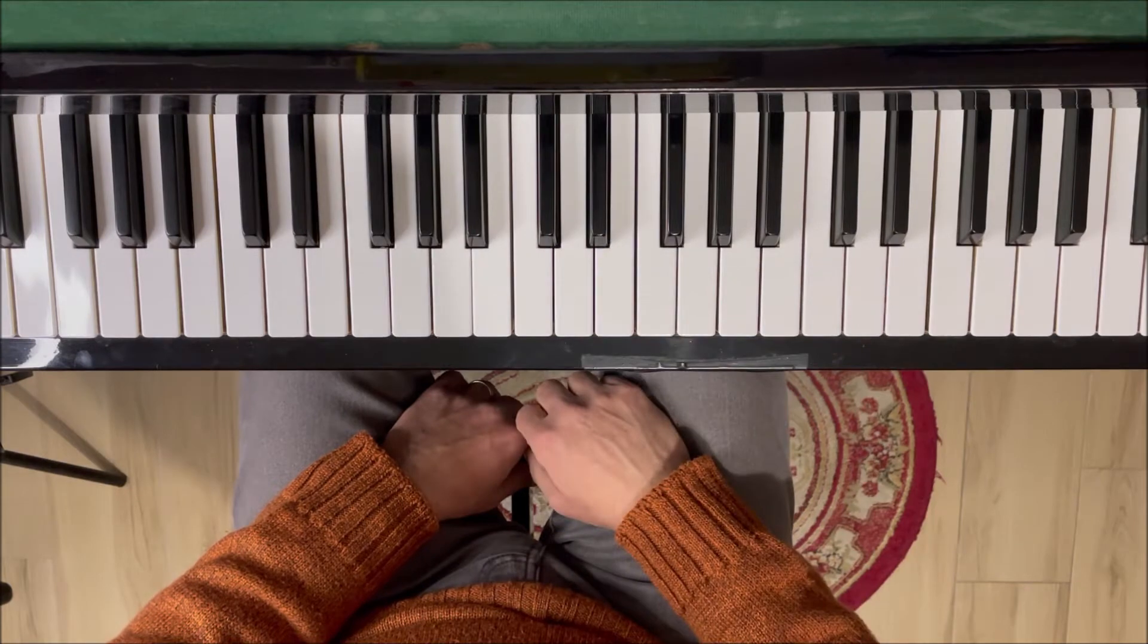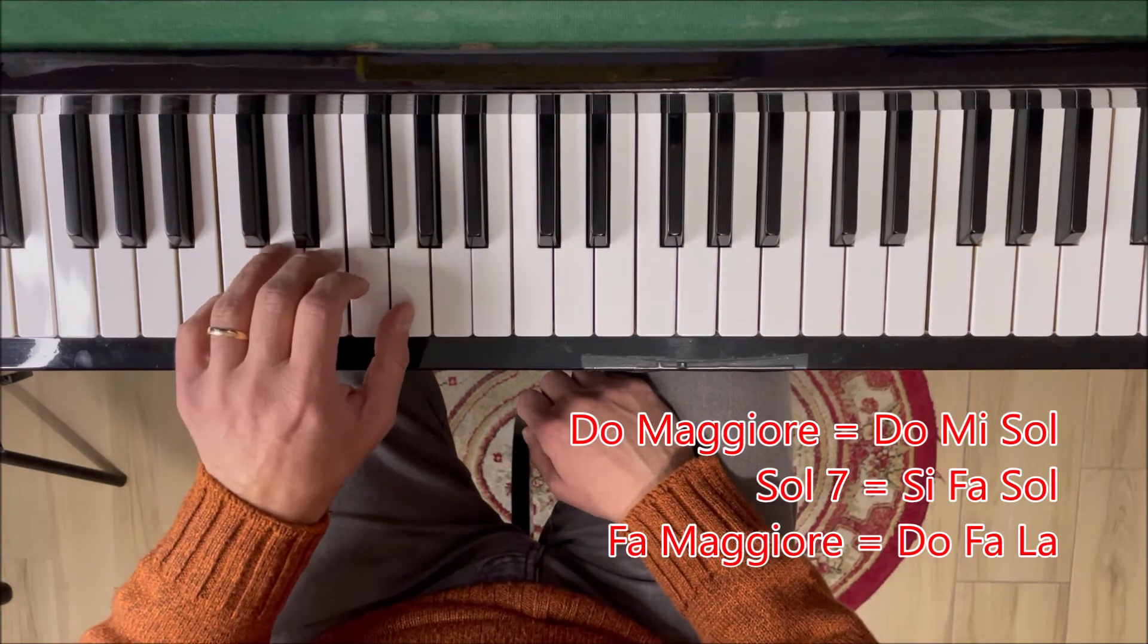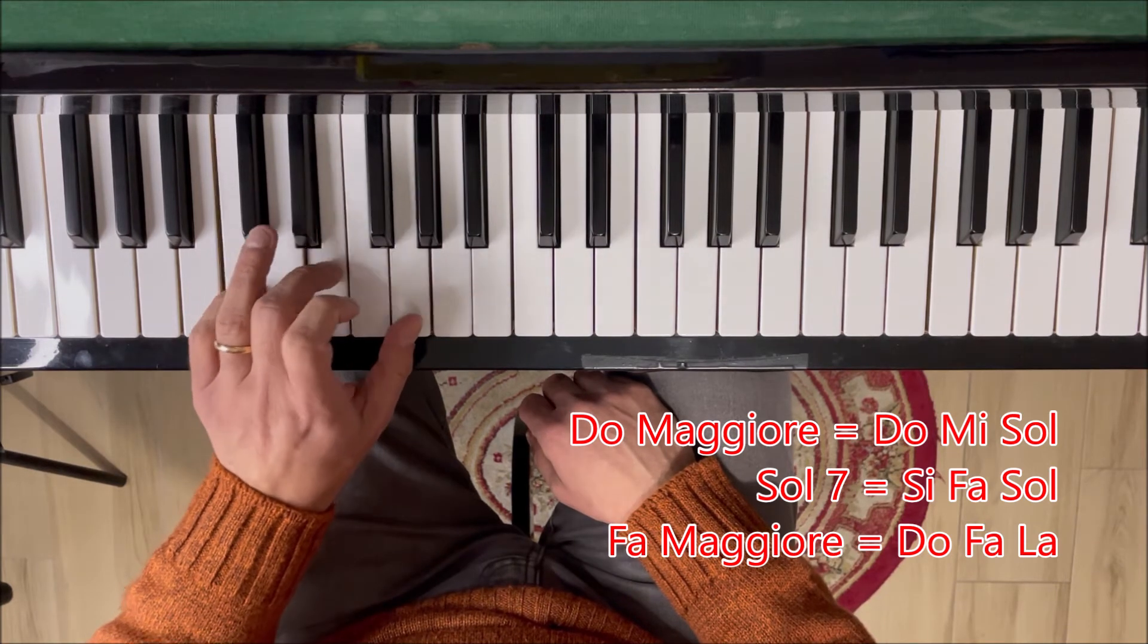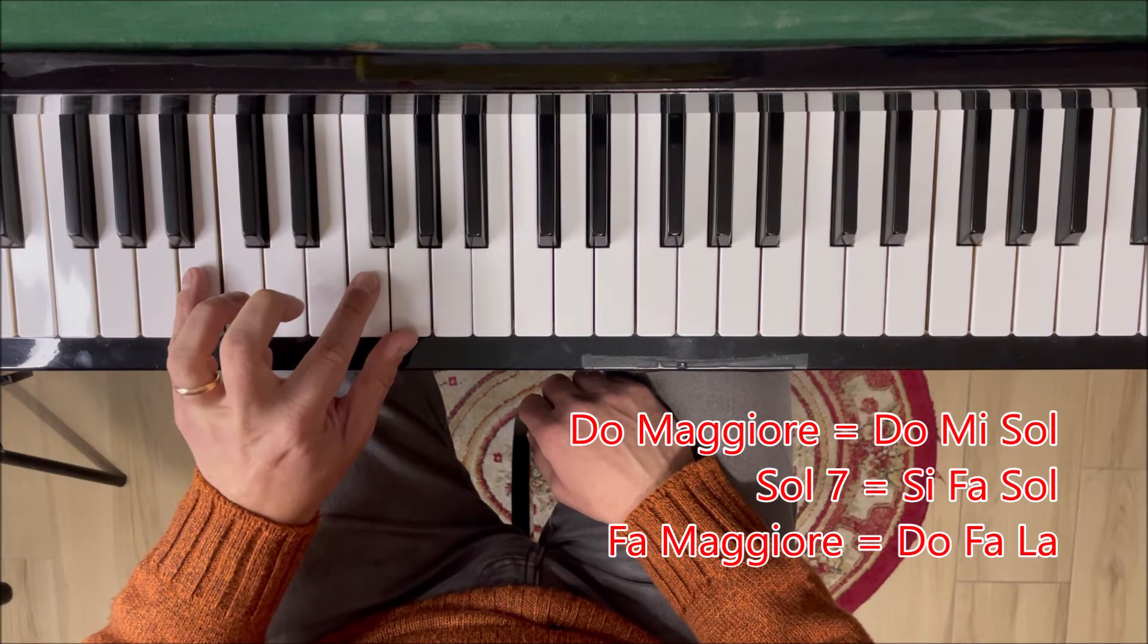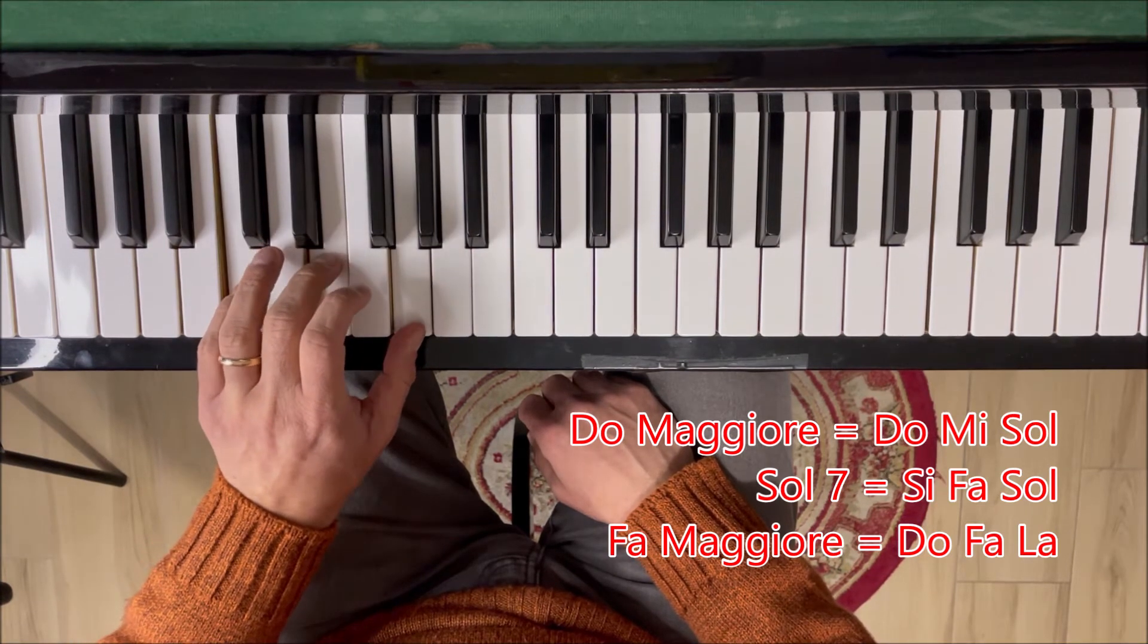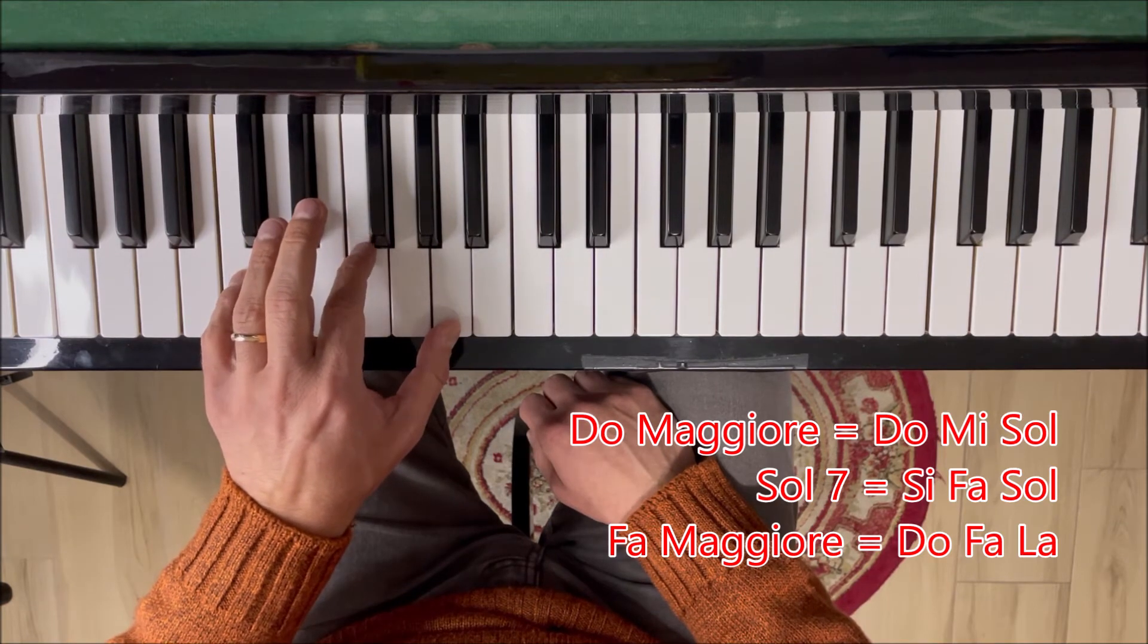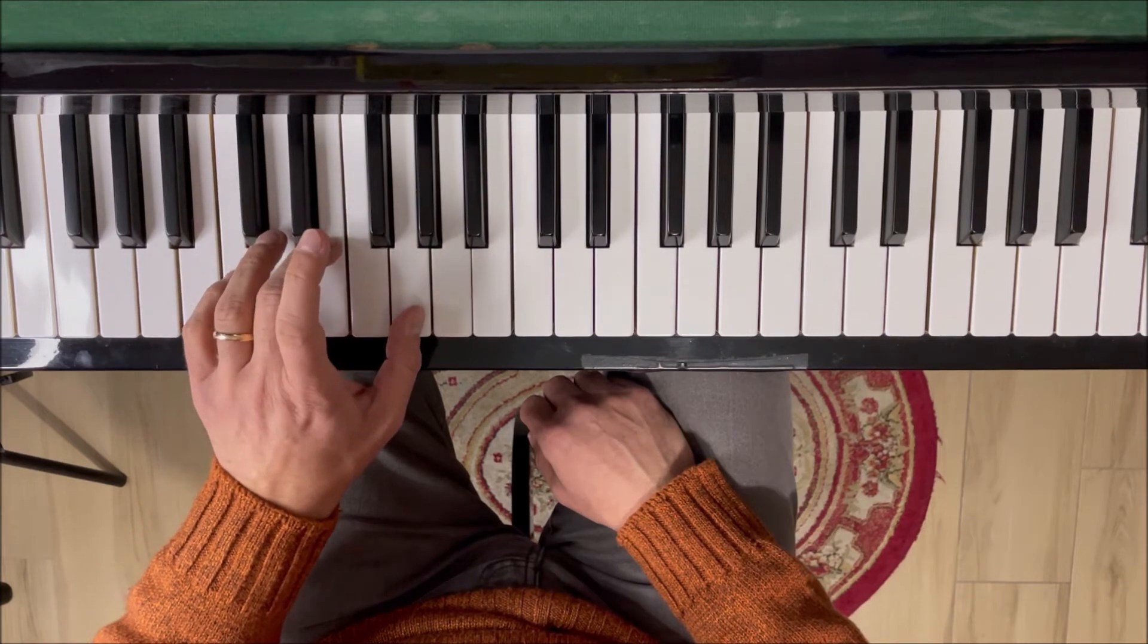E ora l'accompagnamento con la mano sinistra. Gli accordi sono i seguenti: do maggiore per tre battute, sol settima per una battuta, do maggiore per due battute, ora in una battuta fa maggiore e sol settima per terminare con il do.